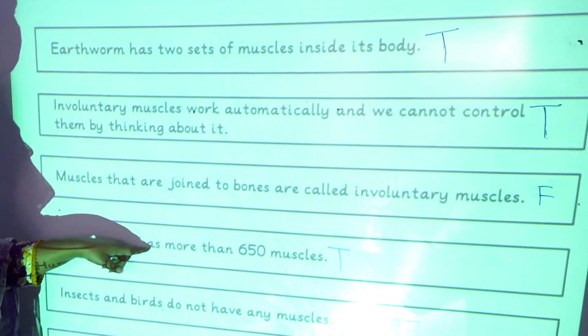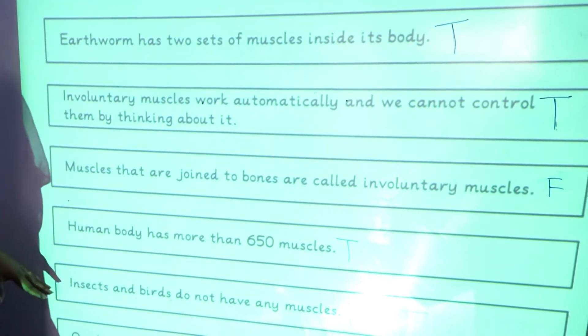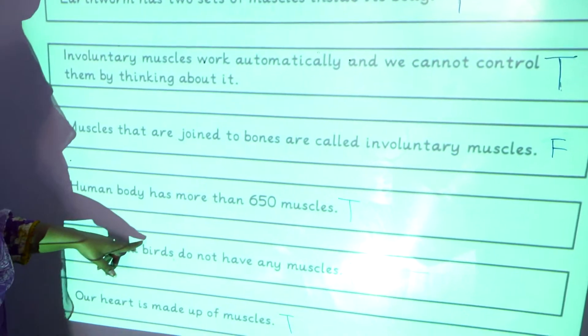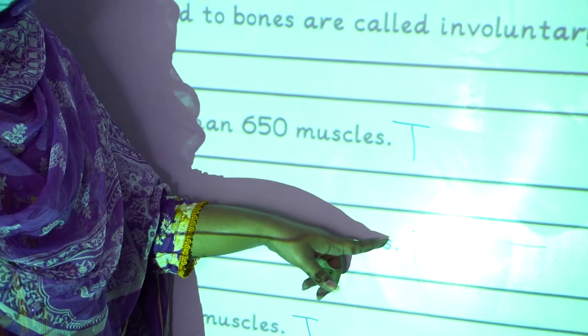A human body has more than 650 muscles, that is true. Insects and birds do not have any muscles. No, false. Insects and birds also have muscles.